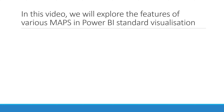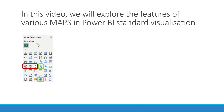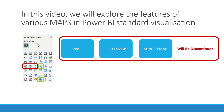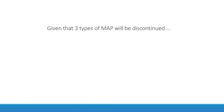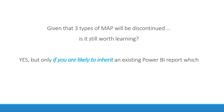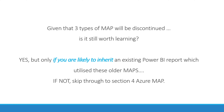In this video, we will explore the features of various maps in Power BI standard visualization — the three maps which will be discontinued in the near future: map, field map, and shape map, as well as Azure map and ArcGIS map, which will not be discontinued in the near future. Given that three types of map will be discontinued, is it still worth learning? The answer is yes, but only if you are likely to inherit an existing Power BI report which utilizes these older maps. If not, skip through to section four, the Azure map.